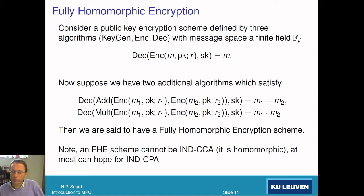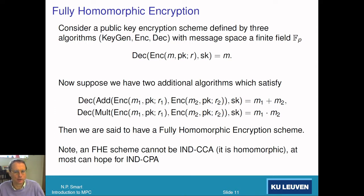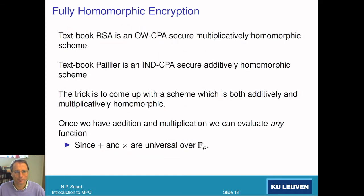For those of you who have seen cryptography before, you can't have a CCA-secure fully homomorphic encryption scheme, because it's homomorphic — it's malleable. So the best you can get is a CPA-secure scheme.